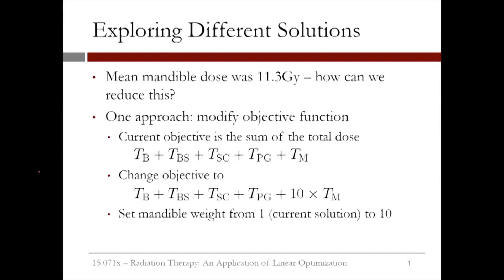In the previous video, we saw that the mandible, or jawbone, received the highest dose out of all of the critical structures. The mean mandible dose was 11.3 gray. So how can we reduce this?